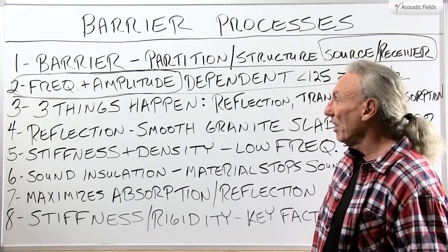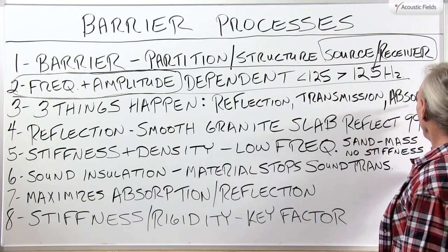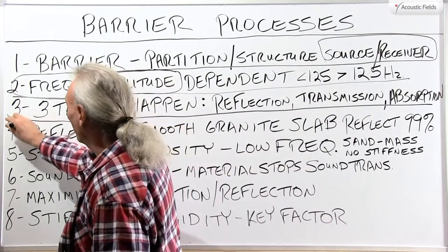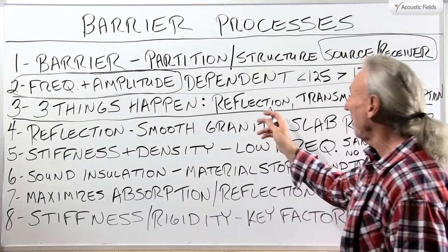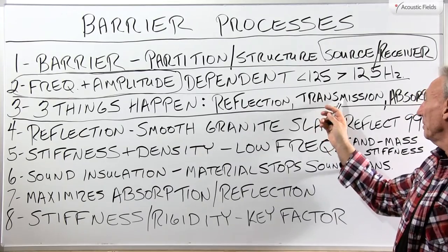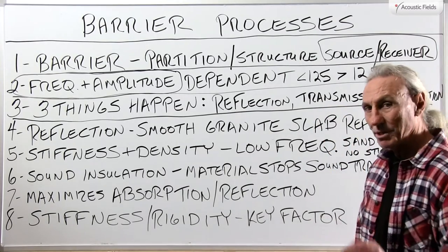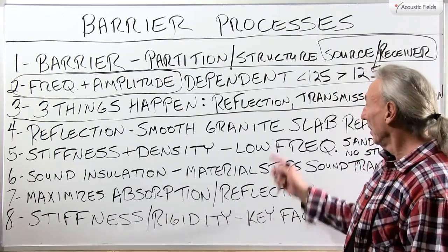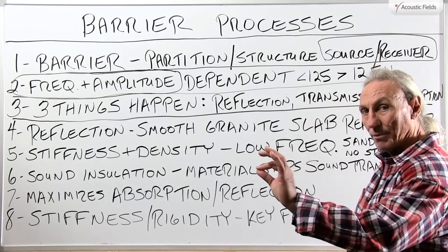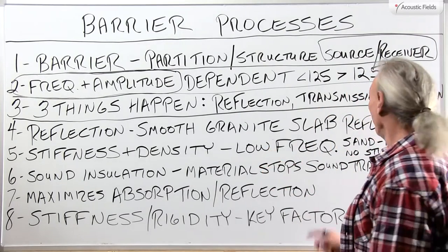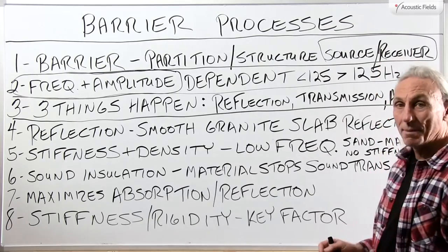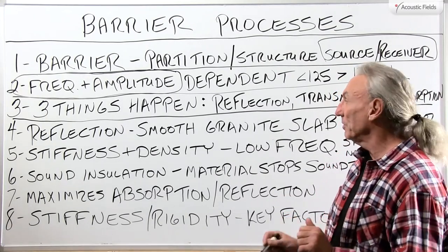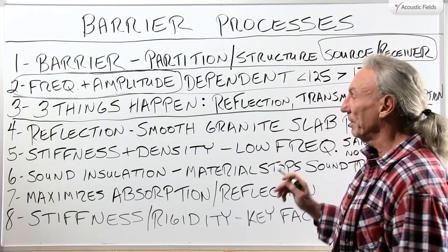It's always a cost thing. So what are we trying to do with our barriers? We have to realize that three things happen: we have reflected energy, transmission, and absorption. Some of the energy that strikes our barrier is reflected back, some of it goes through through a process called transmission, and some of it is absorbed. So we have three things that the barrier must do — reflection, transmission, and absorption.